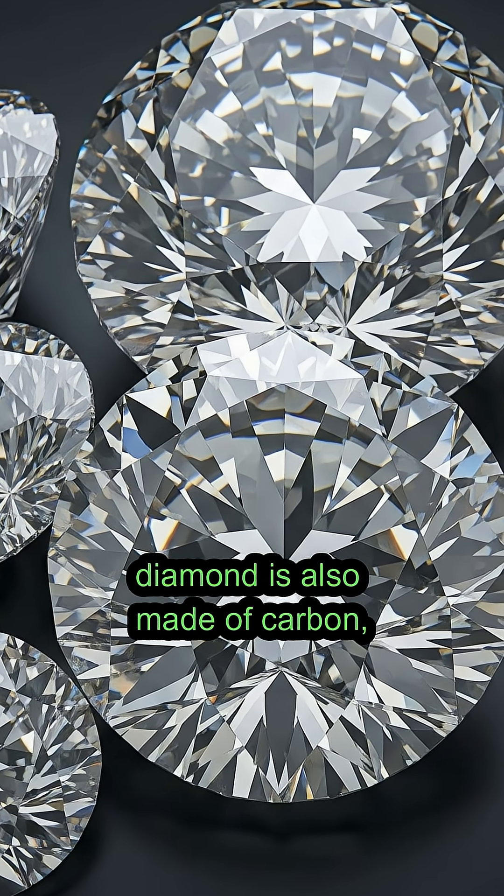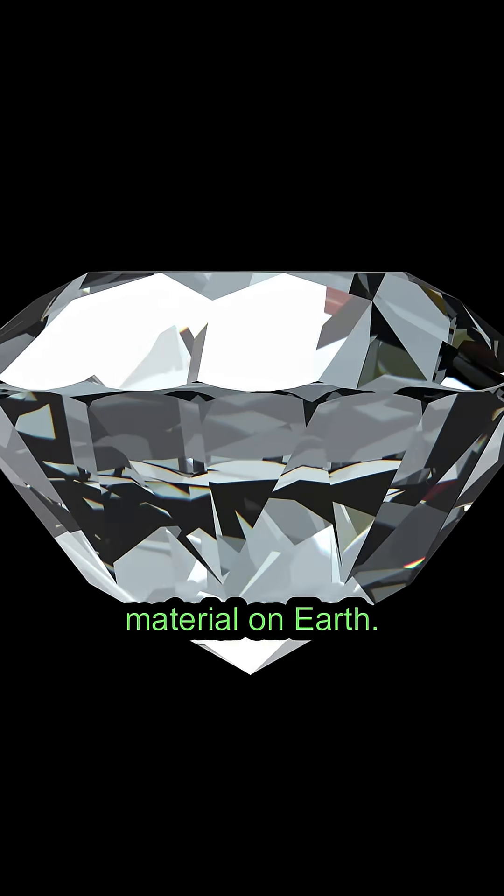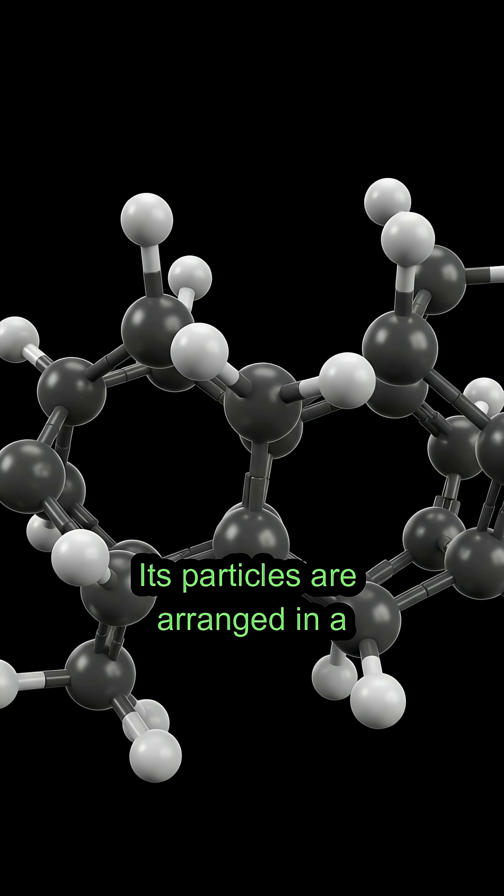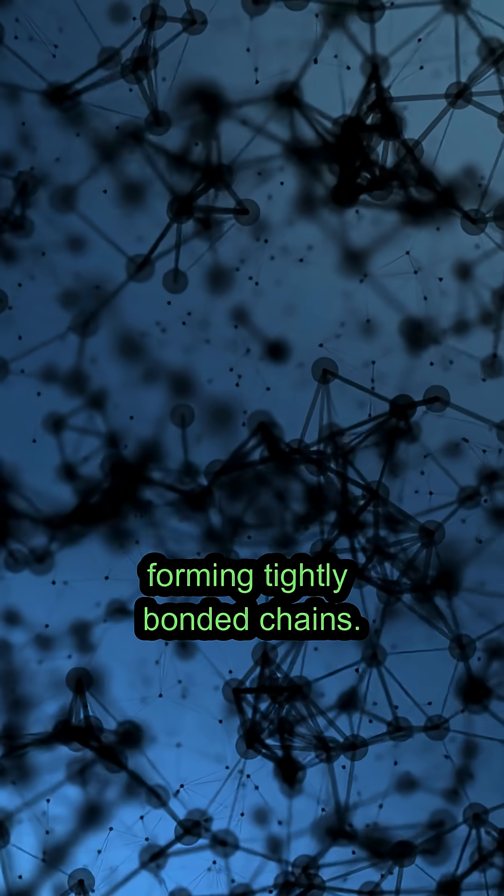On the other hand, diamond is also made of carbon, but it's the hardest and most durable material on Earth. Its particles are arranged in a super-strong three-dimensional structure, forming tightly bonded chains.